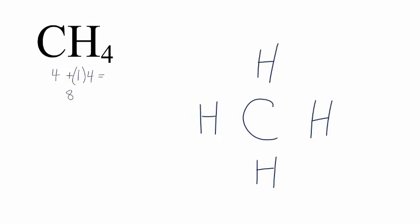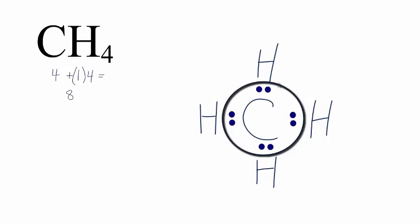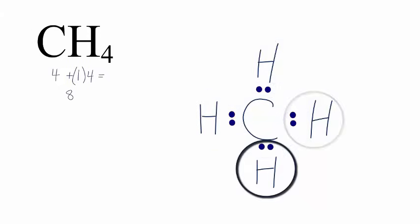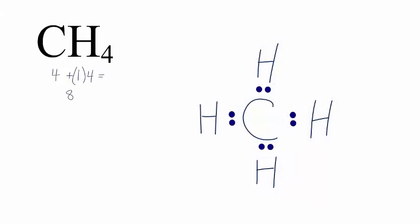Next, we'll put a pair of electrons between each of the atoms to form a chemical bond. At this point, the carbon has an octet. We've used 2, 4, 6, 8 — all our valence electrons — and the hydrogens each have two. This is an important rule: hydrogens only need two valence electrons to have a full outer shell. So the carbon has an octet, the hydrogens each have two, and we're done with this Lewis structure.